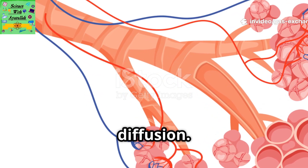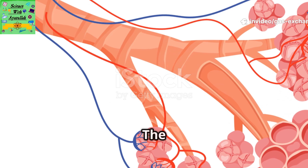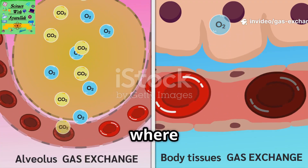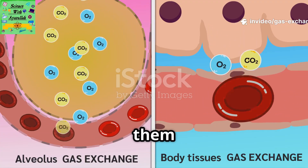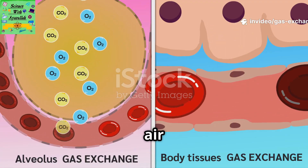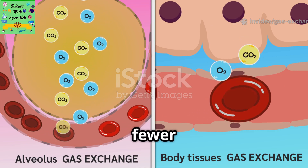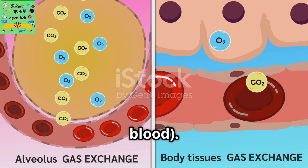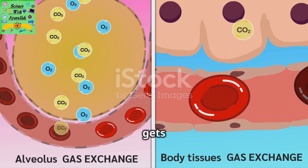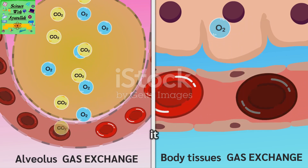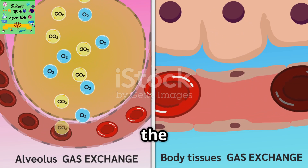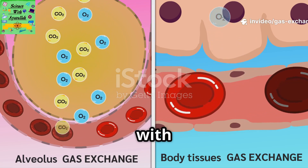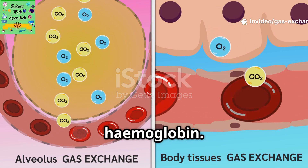This is called diffusion. The oxygen molecules move from where there are a lot of them, in the air, to where there are fewer of them, in the blood. When the oxygen gets into the blood, it dissolves. It goes into the red blood cells, where it combines with hemoglobin.